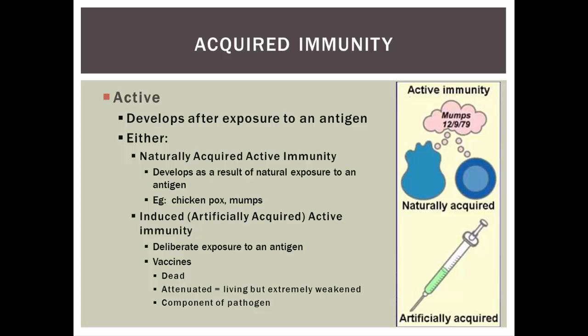Induced or artificially acquired immunity is provided through vaccines. Here you get deliberate exposure to the antigen under controlled conditions. The vaccines are going to be either dead pathogens, or attenuated — meaning they are living but extremely weakened so they aren't strong enough to cause any disease — or components of the pathogen that will trigger an immune response. So you get the immune response but you don't get the disease. Since you have the primary immune response to the vaccine, you now have the memory cells, so when you are exposed to that pathogen, you aren't going to get the disease because you have those memory cells in place.